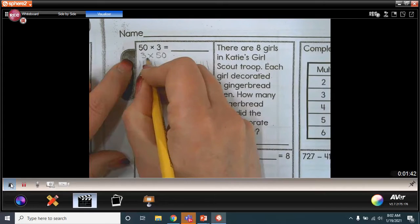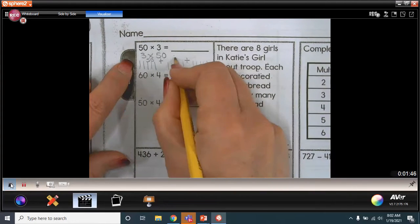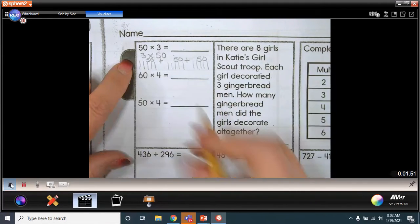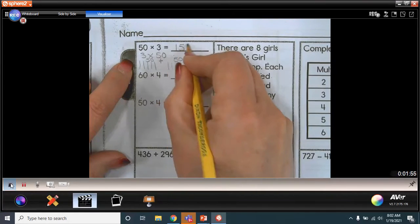So we're counting or adding 50 each time. And just like counting by fives, 5, 10, 15, we have 50, 100, 150.